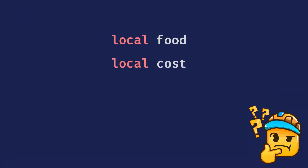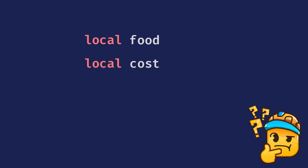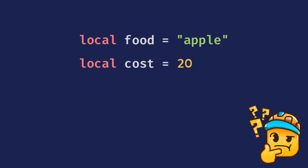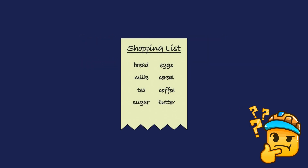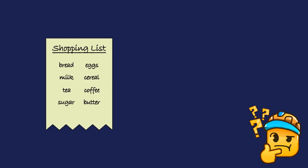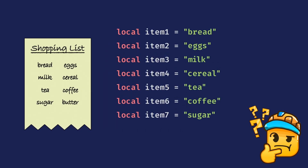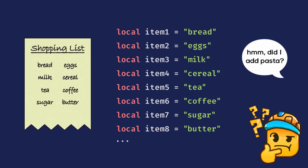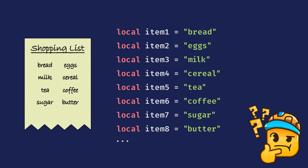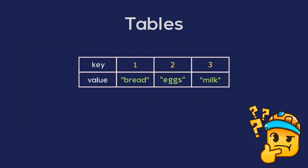So far, we've learnt how to create variables that act as containers which store a value such as a string or number. But let's say we have a list of items that we want to buy from a store. Storing each item we want to buy in separate variables would be incredibly inefficient, and it would become increasingly difficult to locate and edit items as the list continues to grow. Instead, we can organise all of this information and data in a table format.